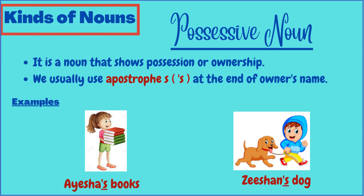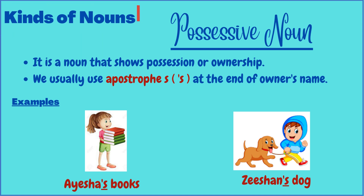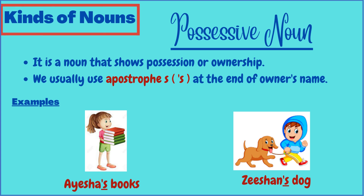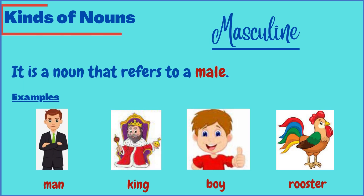The next kind is the possessive noun. It shows possession or ownership — in simple words, it tells that something belongs to someone. Usually an apostrophe 's' is used at the end, but other cases may use an apostrophe only. Examples: 'Aisha's books,' where apostrophe 's' shows the books belong to Aisha; and 'Dishan's dog,' showing the dog belongs to Dishan.